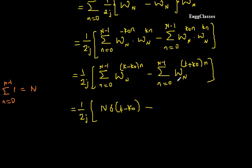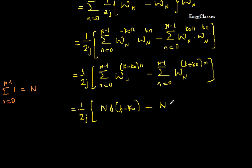Similarly, for the second term W_N^((k+k₀)·n): if I put k = −k₀, it becomes W_N^0 = 1, and the summation equals N. Using the impulse signal I write it as N · δ(k + k₀). When k = −k₀, δ(0) = 1 and we get N; when k ≠ −k₀, the term becomes 0.